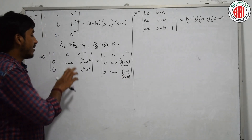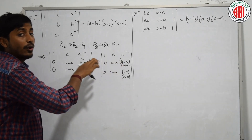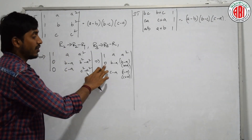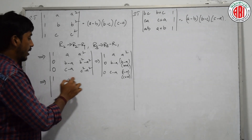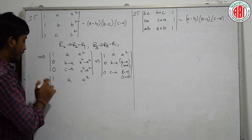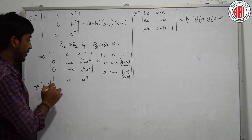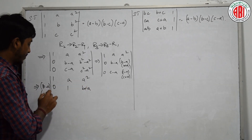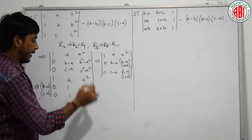Now, B² minus A² can be written as (B minus A)(B plus A), and C² minus A² as (C minus A)(C plus A). Because if I get B minus A, I can take B minus A common from the whole row. From 0, we can take any number as common. Taking B minus A common from row 2 leaves 0, 1, B plus A. Taking C minus A common from row 3 leaves 0, 1, C plus A.